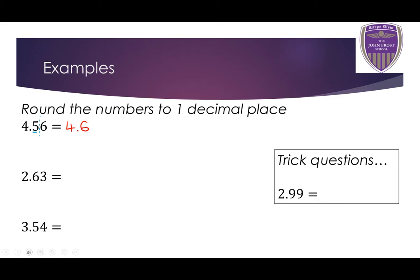Second example: I've got 2.63. Which number is in the first decimal place? It is the 6, so I'm going to draw a line after it. Is the number after the first decimal place 5 or bigger? In this case it's a 3, which is less than 5, meaning this 6 in the first decimal place stays exactly as it is. So 2.63 to one decimal place is 2.6.